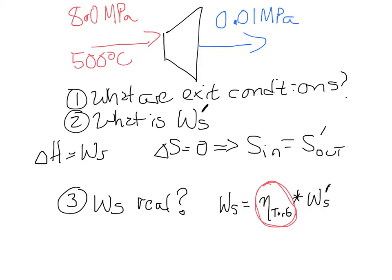And so in this case, I want you to tell me what our work would be if we had a 75% efficient turbine. Turbine efficiency of 0.75. So go ahead and work that out, and then I'm going to hit you with the final piece of complexity.